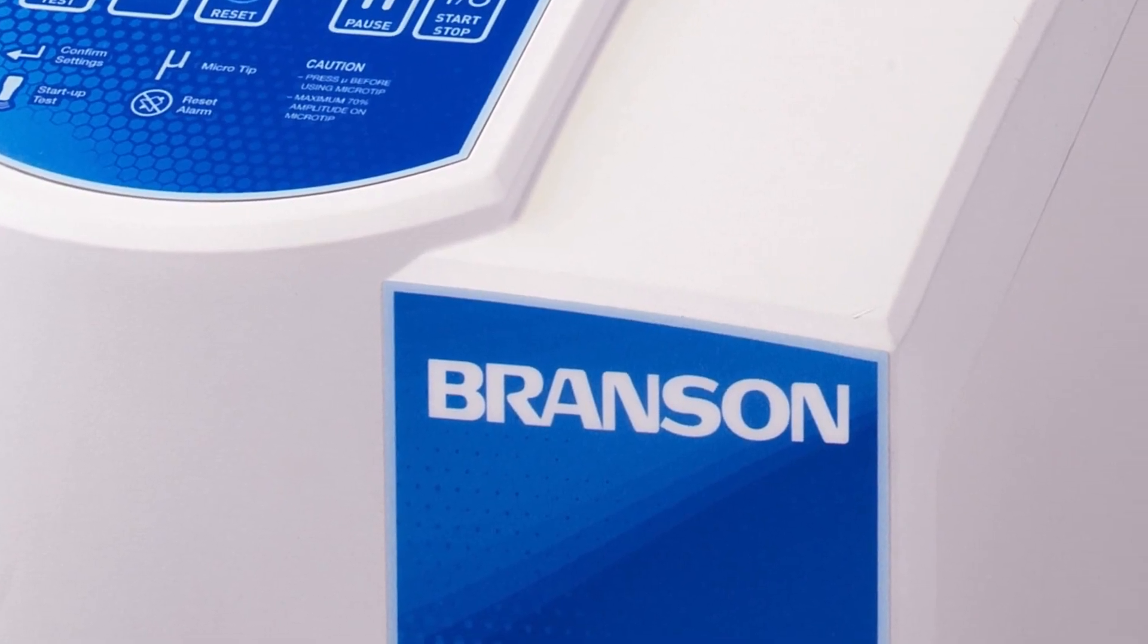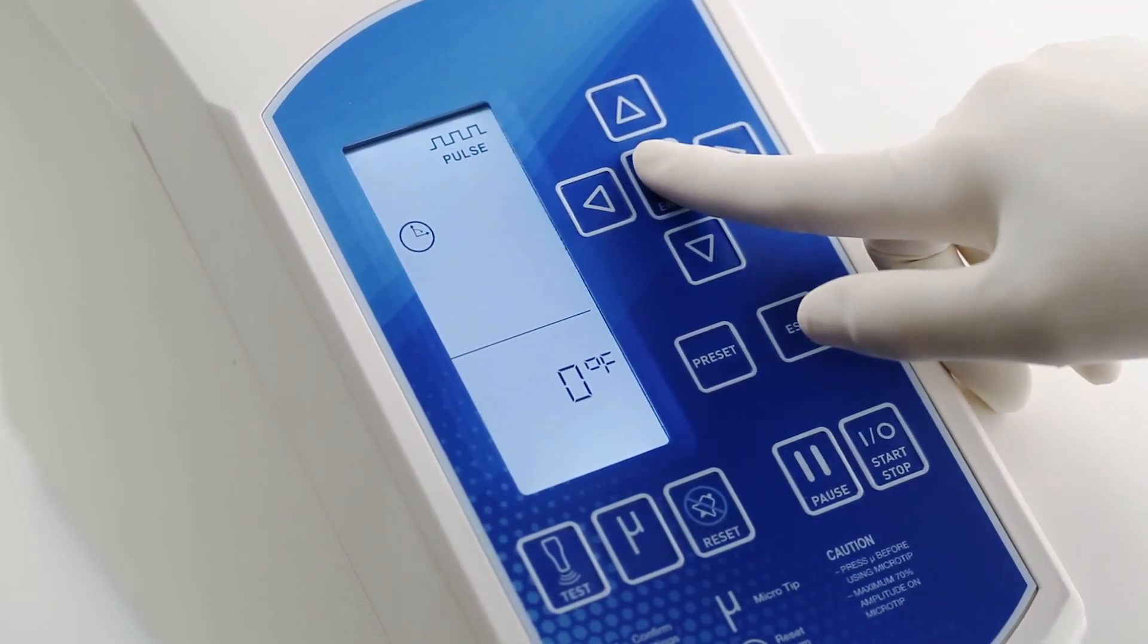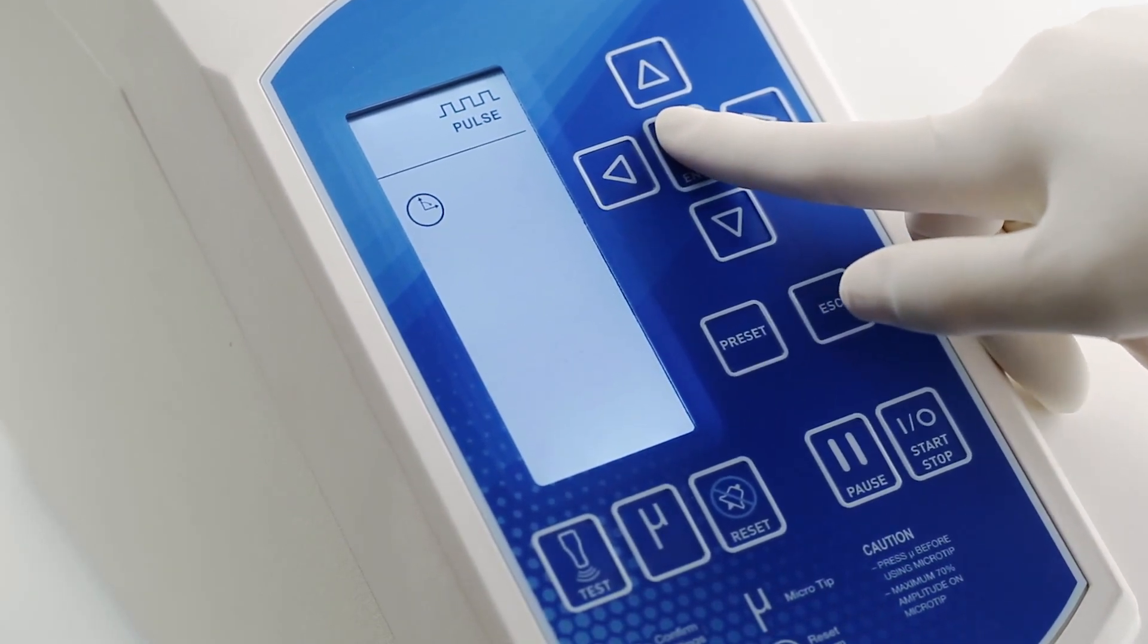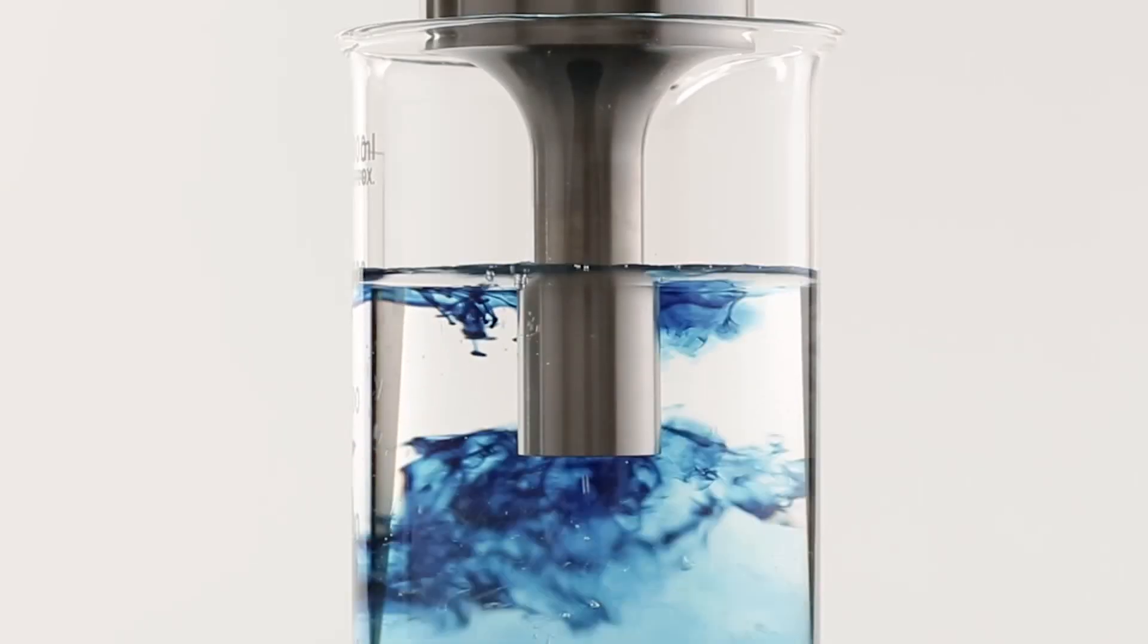And you can specify a temperature range for processing your sample. Once the lower temperature limit is reached, Branson's True Temperature Control automatically modulates the pulse to prevent the sample from exceeding the maximum limit. True Temperature Control is another exclusive Branson feature to ensure consistent, predictable results.